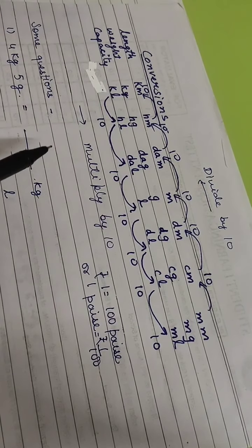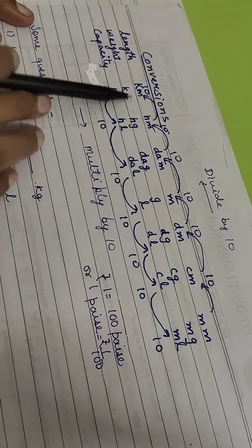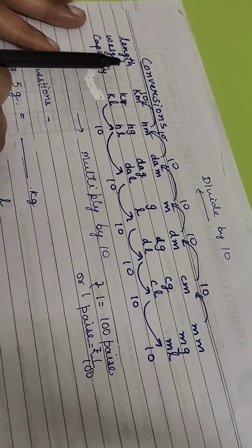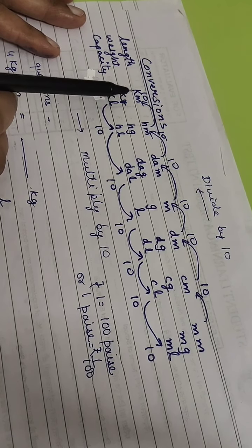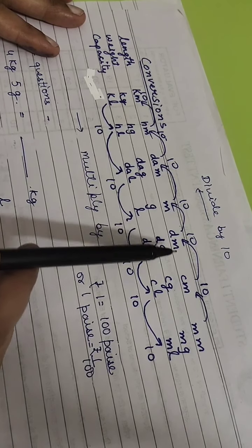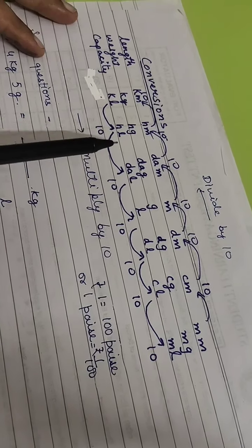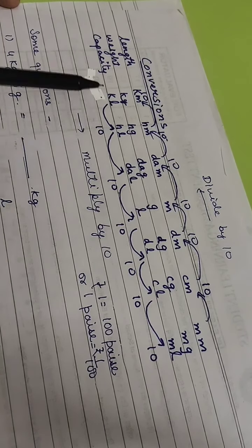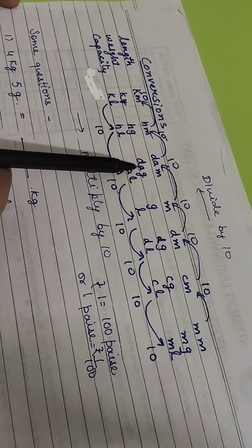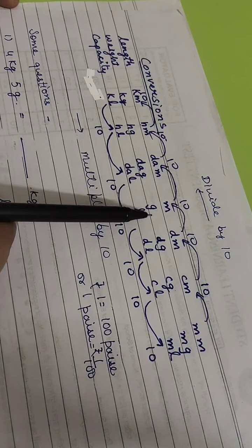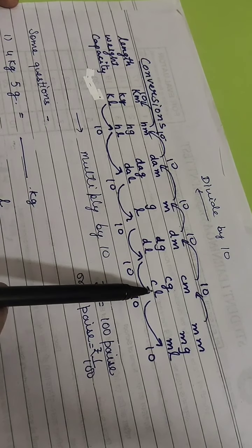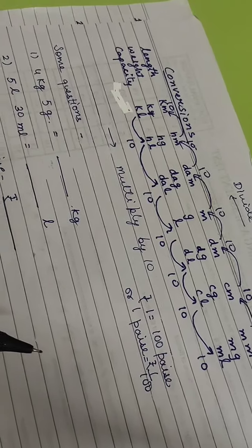To help remember this table, you can use a mnemonic from earlier classes: 'King Heavy Died, Mother Did Not Cry Much' — taking the first letter of each word. You can also remember it as 'King Henry Died, Granny Didn't Cry Much' or 'King Henry Died, Lady Didn't Cry Much.'